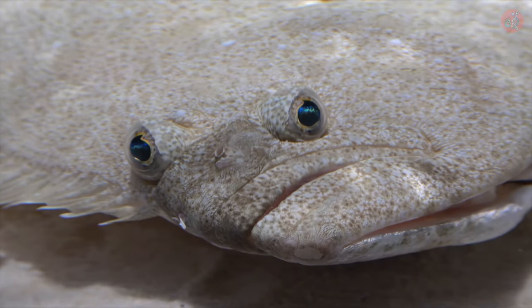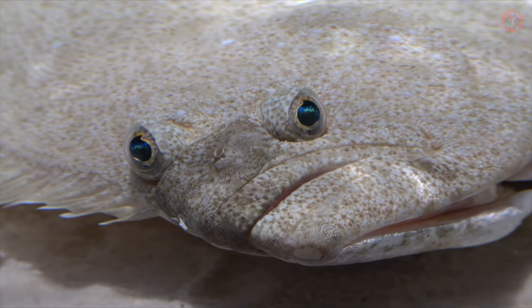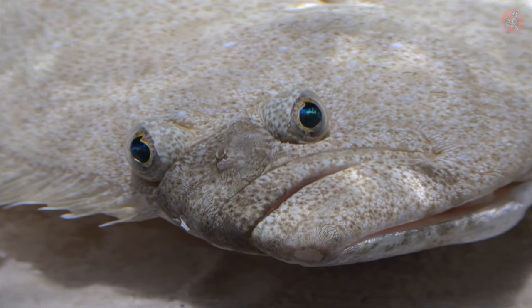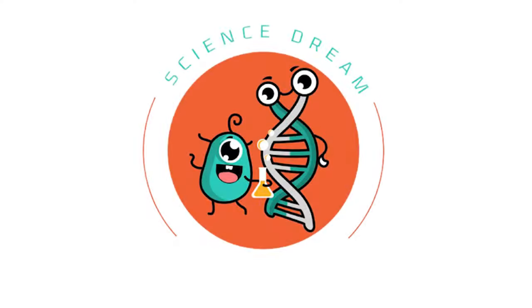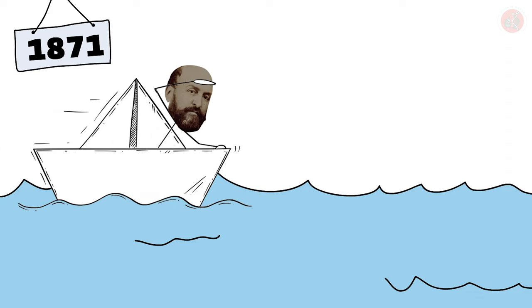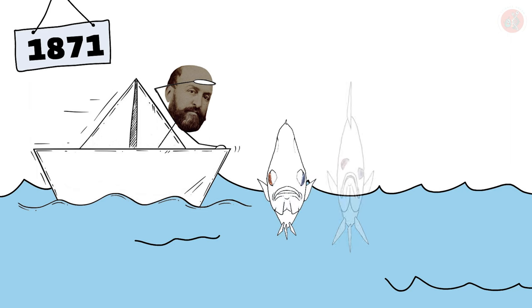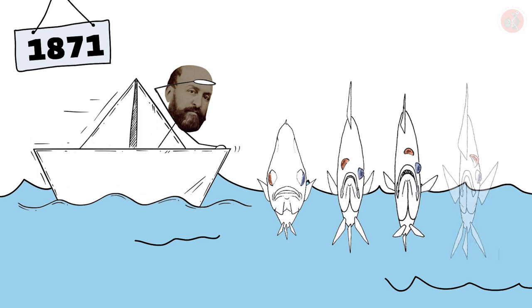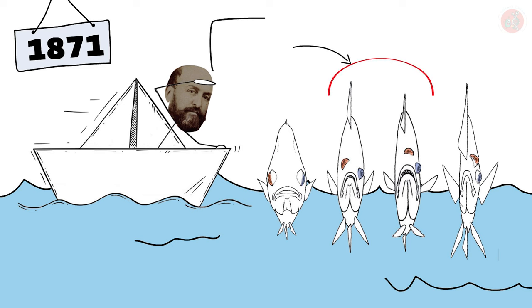This led to the eyes of the flounder becoming a prime target for critics of evolutionary theory. In particular, in 1871, British biologist George Mivart criticized Darwin's theory, contending that if the flounder's eye evolved gradually to the other side, the intermediate forms would have no survival advantage.